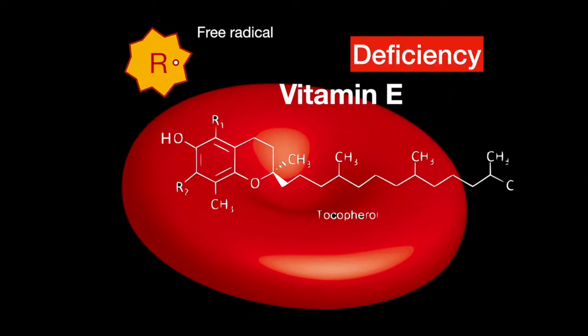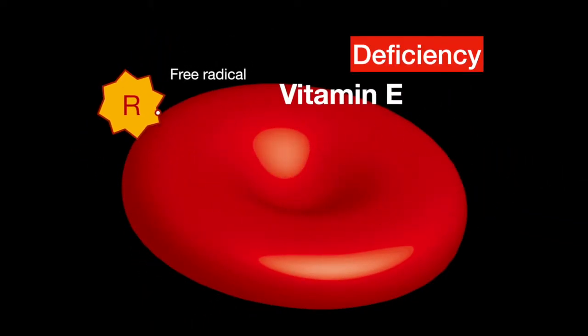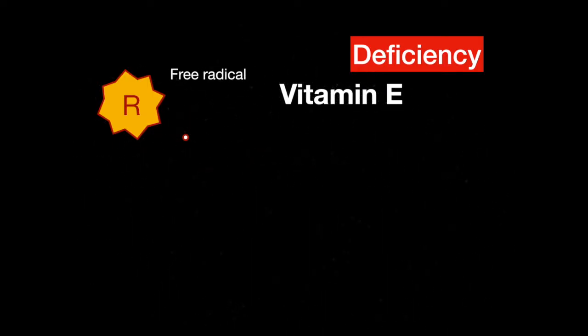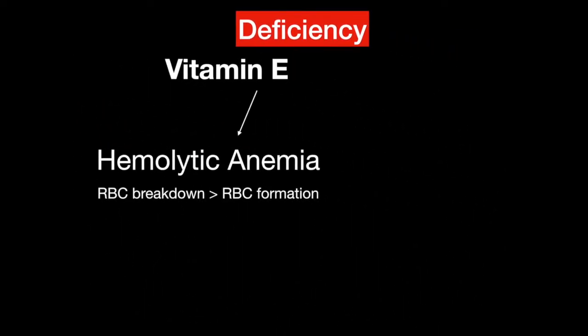A deficiency in vitamin E leaves the body unable to protect the red blood cells from free radical damage, thus leading to hemolytic anemia, a condition in which red blood cells are being destroyed faster than they are being produced.